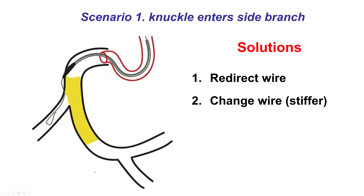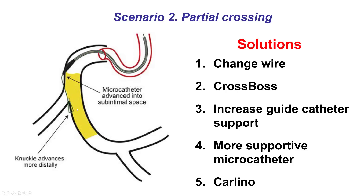The first scenario is that the guide wire is in the side branch. This is very similar to what was seen with the CrossBoss. The key part is to realize this — that's where orthogonal views are key — and then pull it back and redirect, or use a stiffer wire to redirect.